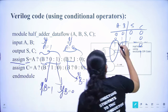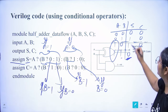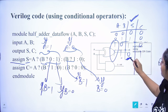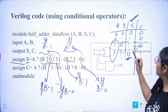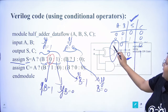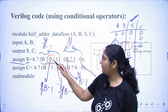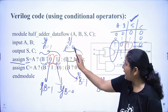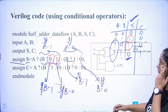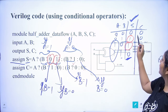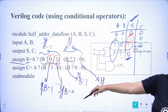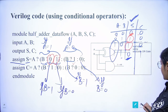When a is one and b is one, the output for sum is zero. When a is one and b is zero, the output is one. When a is zero and b is one, output is one. When a is zero and b is zero, output is zero. This is how conditional operators model the sum output of a half adder.